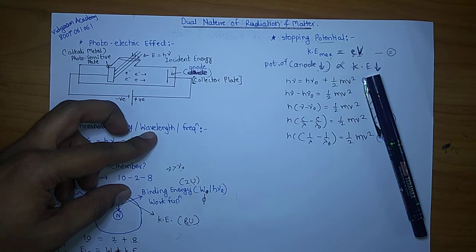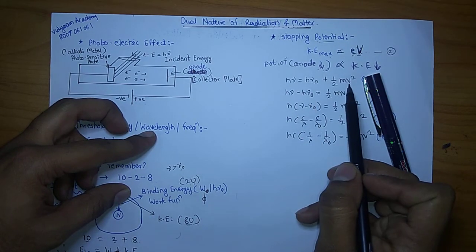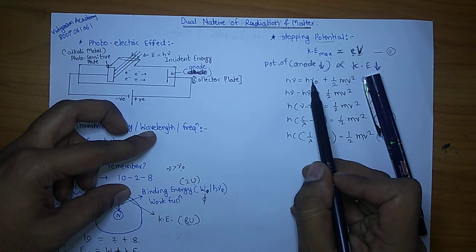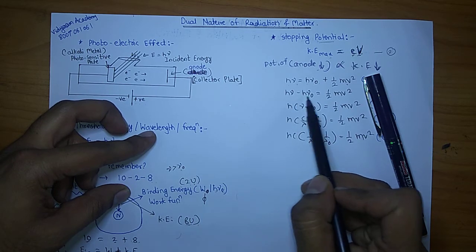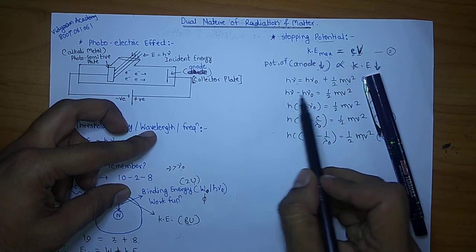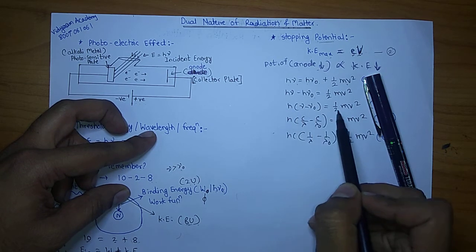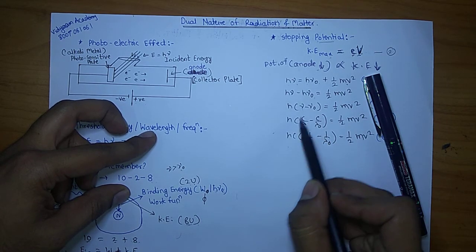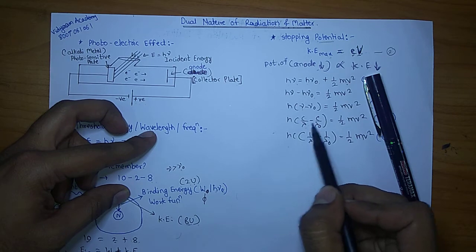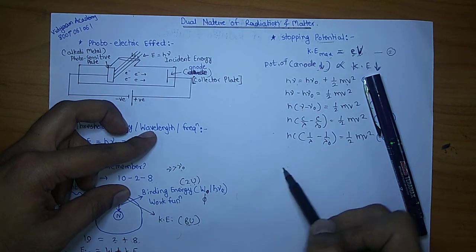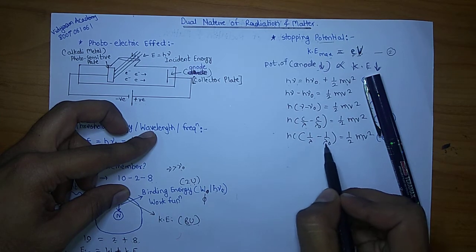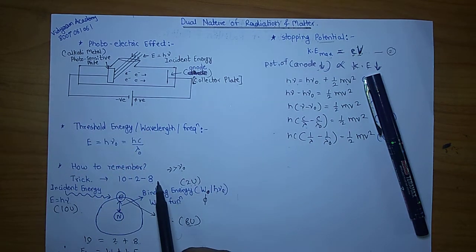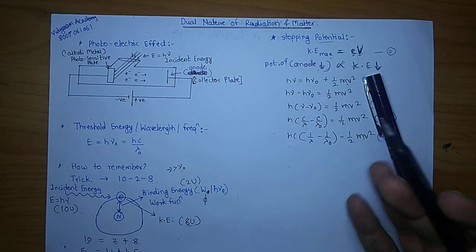Now I will give you one more idea. As I have shown here, equation number one: H nu equals H nu naught plus one-half MV squared. If you shuffle this H nu to the left side, you can write H nu minus H nu naught equals one-half MV squared. By taking common H: H times nu minus nu naught equals one-half MV squared. But we know that nu is nothing but c by lambda, so c by—H in bracket—c by lambda minus c by lambda not equals one-half MV squared.